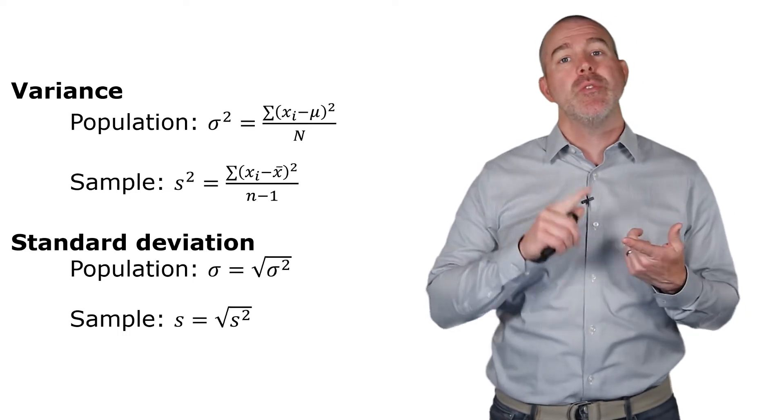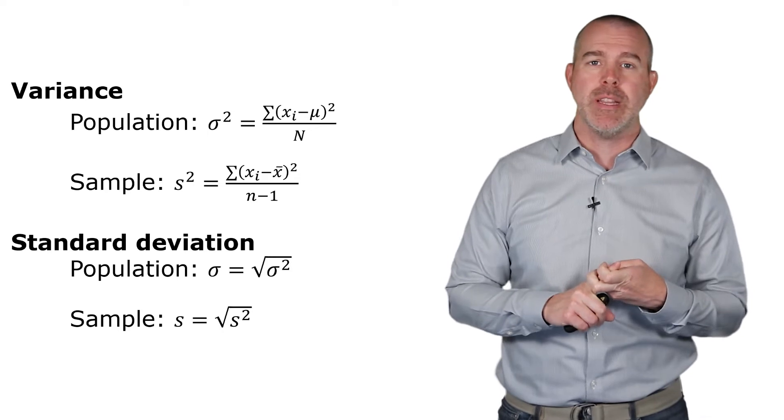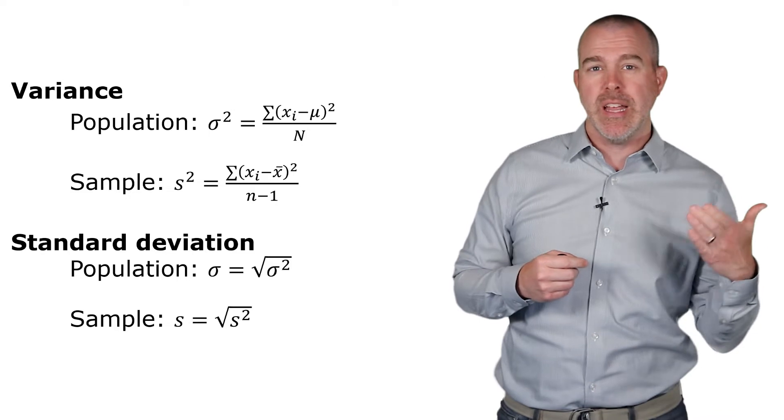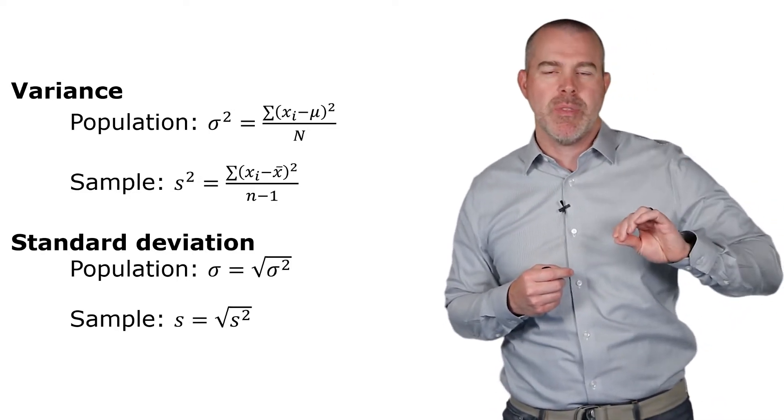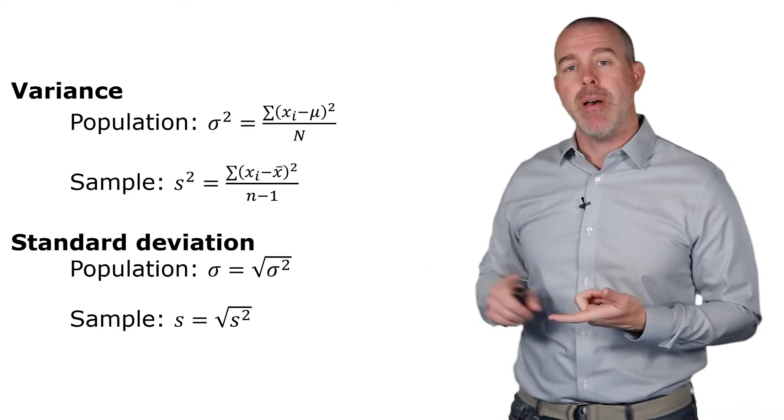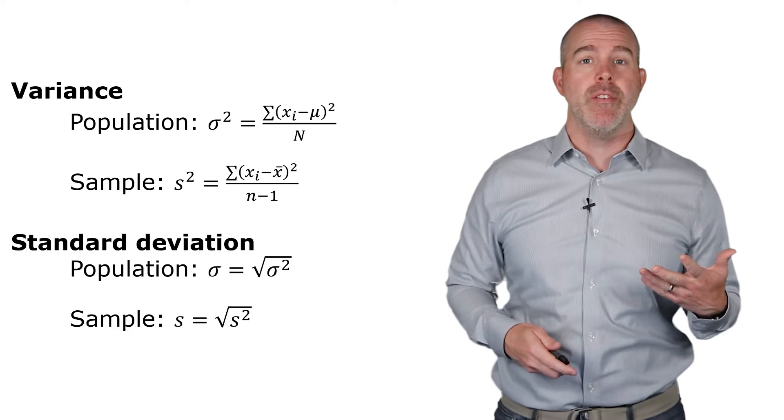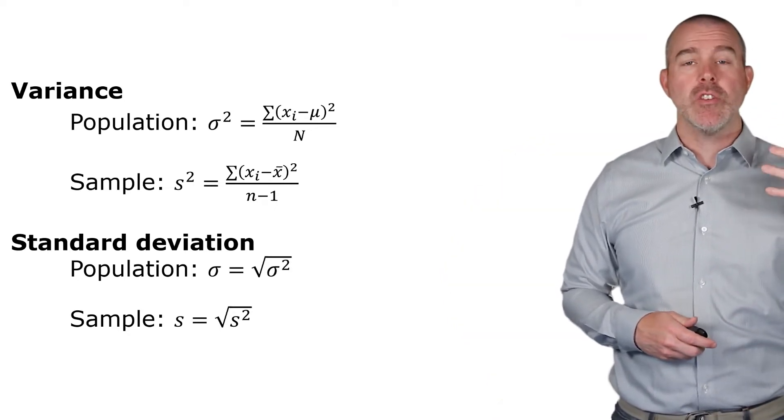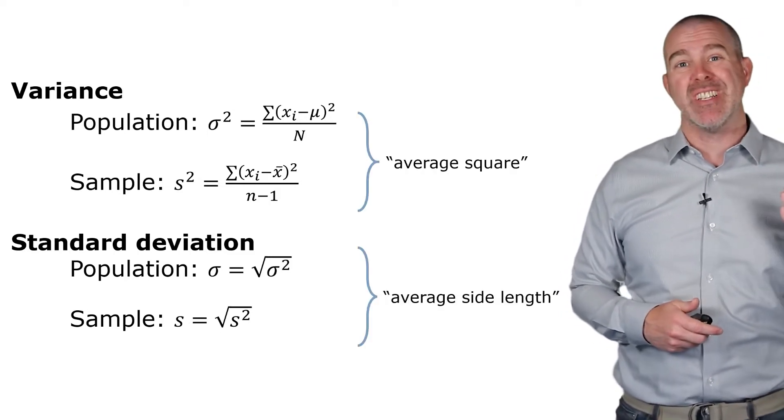I forgot to mention the symbols. We use sigma squared for the population variance, and then s squared for the sample variance. You saw this with the means where we had this Greek letter for the population parameter, and then a typical something from our alphabet for the sample. And so the population standard deviation is sigma, and then the sample standard deviation is s. And those are just the square roots of the variance. And again, to remind you about the meaning behind this, the variances are the average square. And then the standard deviations are the average side length.